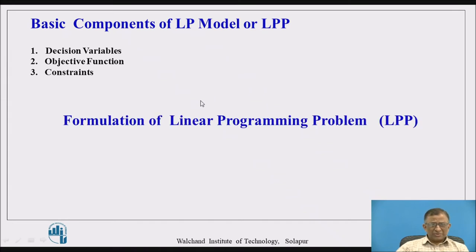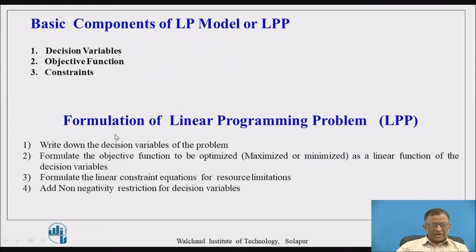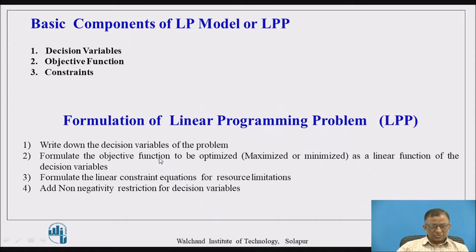In formulation of a linear programming problem, one has to identify the decision variables of the problem. If the manufacturing department is producing a number of products, the quantity of products to be produced using limited resources so that profit is maximized — in this case, the quantity of product to be produced is the decision variable. We have to formulate the objective function having a relationship with the decision variables as a linear equation, and also formulate the constraints imposed by the limited resources as linear equations.